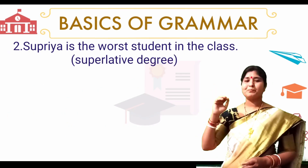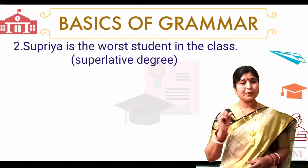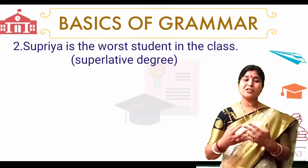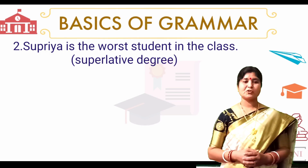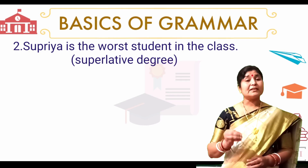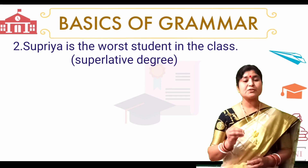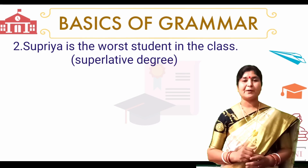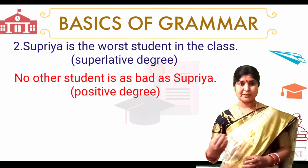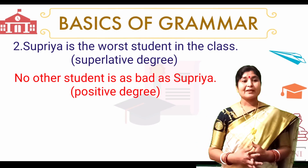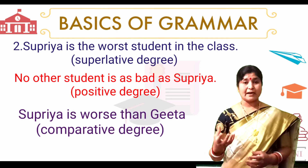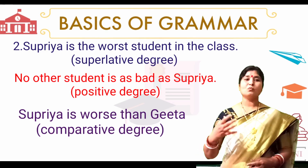Question two: 'Supriya is the worst student in the class' — this is superlative degree. In positive degree: 'No other student is as bad as Supriya.' In comparative degree: 'Supriya is worse than any other student in the class.'